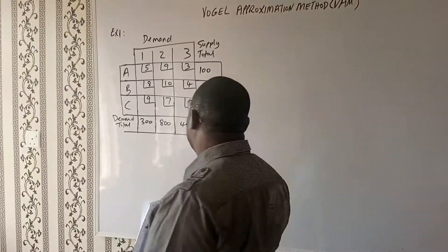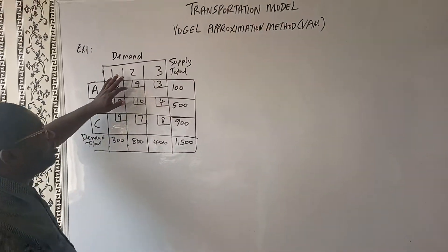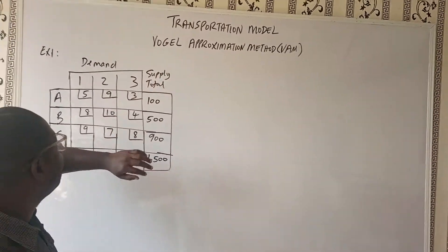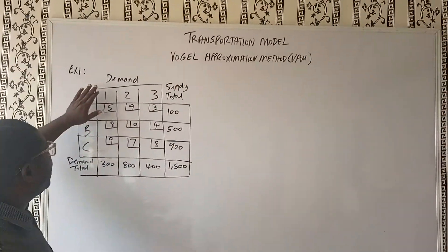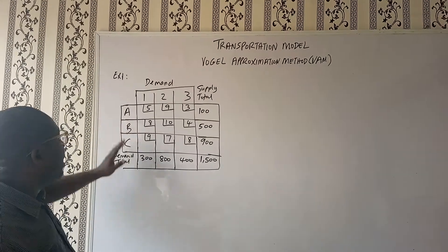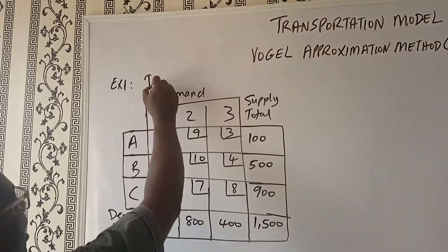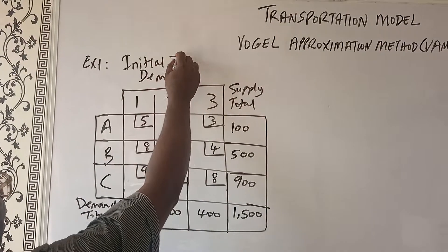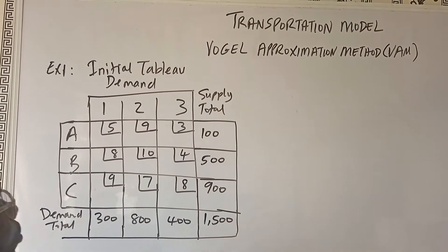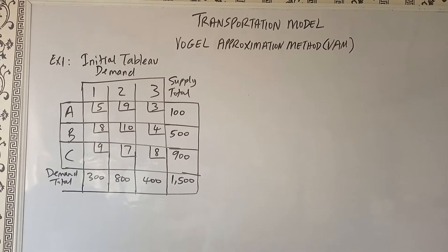As you can see on the board, we have the Vogel Approximation Method. And this is our paper. Let's call this our initial tableau.